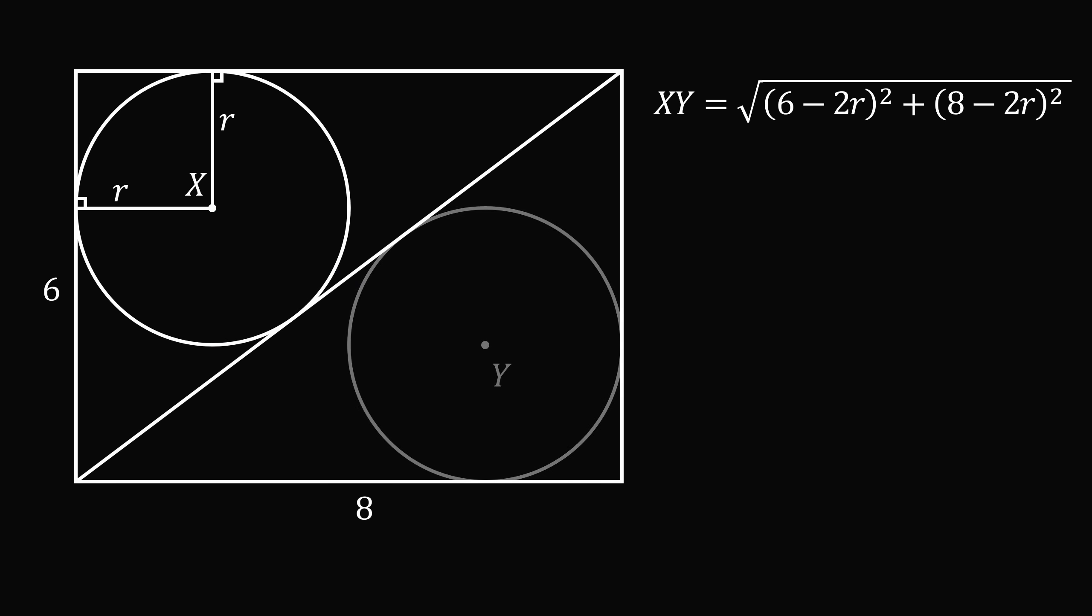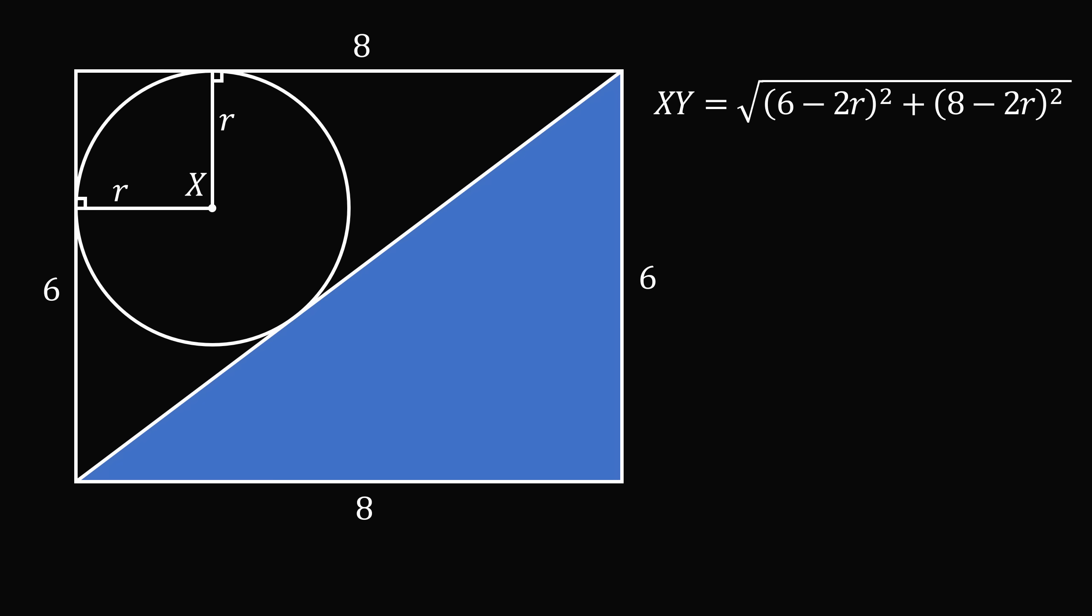Let's focus on one half of the rectangle. This right triangle has legs equal to 6 and 8, which means its hypotenuse is equal to 10. The area of half of the rectangle is equal to 6 times 8 divided by 2, which is equal to 24.